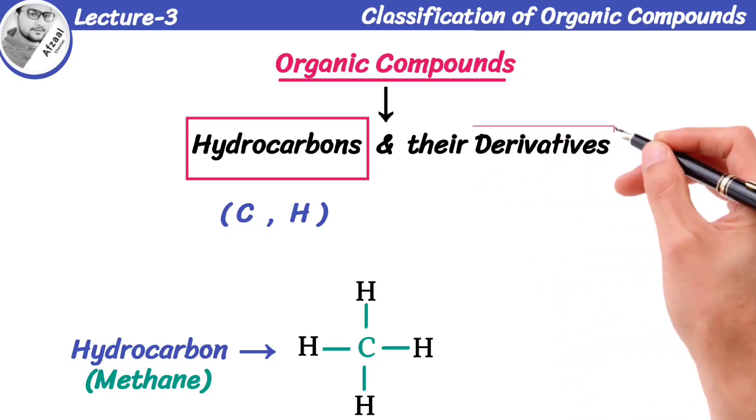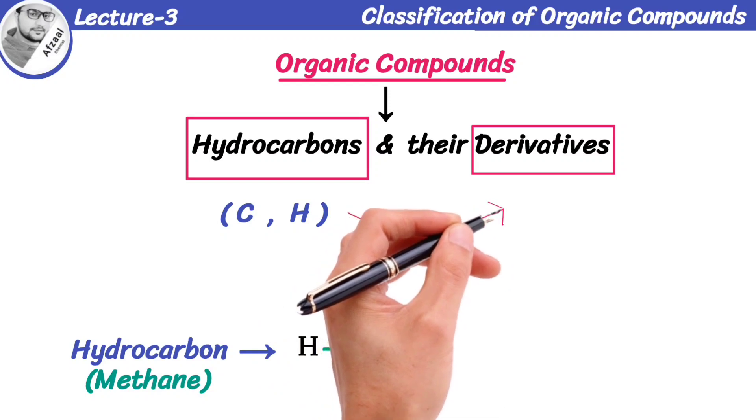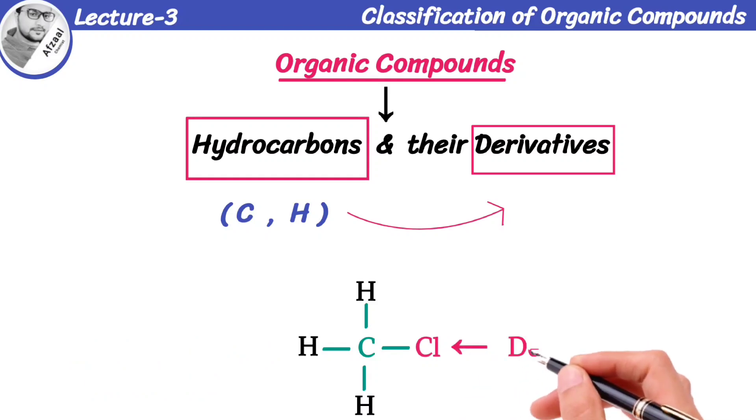Now, what is meant by derivatives of organic compounds? The compounds that are derived from hydrocarbons by replacing one of hydrogens with any other atom. So, the derivative of methane formed by replacing hydrogen with a chlorine atom is known as chloromethane. So, an organic compound may be hydrocarbon or its derivative.